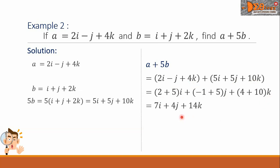Simplifying now, the 2 plus 5 is 7i. Negative 1 plus 5 is positive 4. Then, we write the j plus 4 plus 10 is 14. Then, we write the k. This is now the final answer.